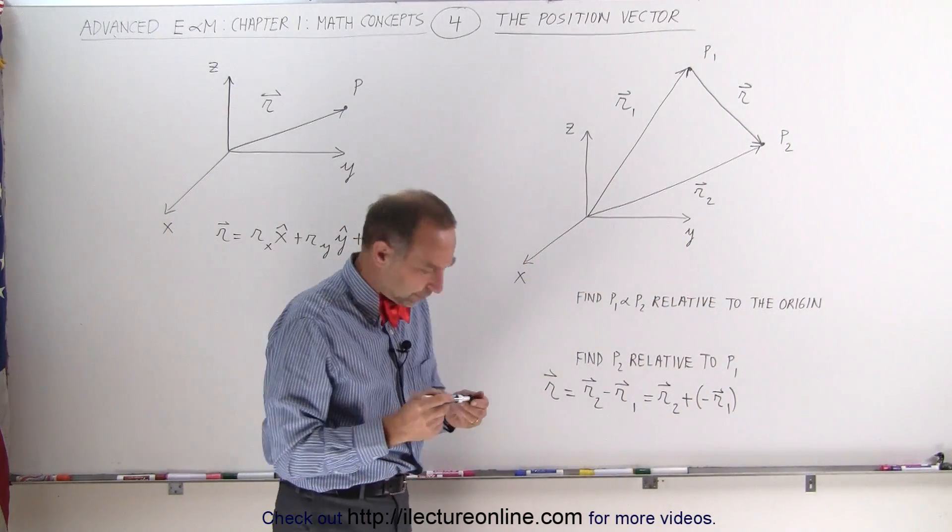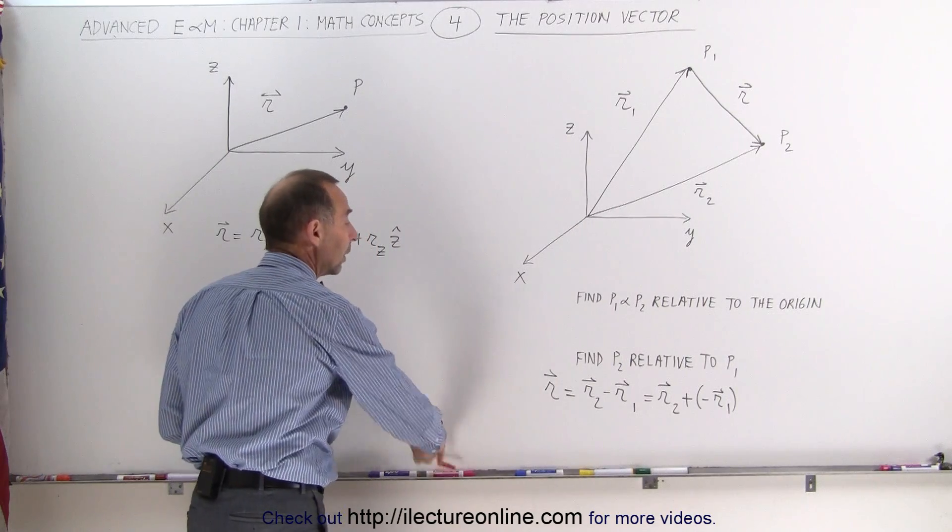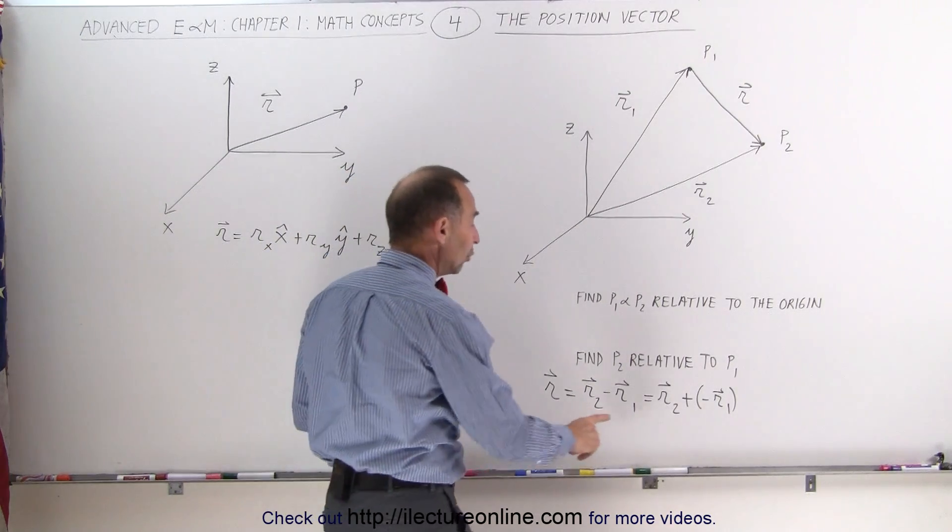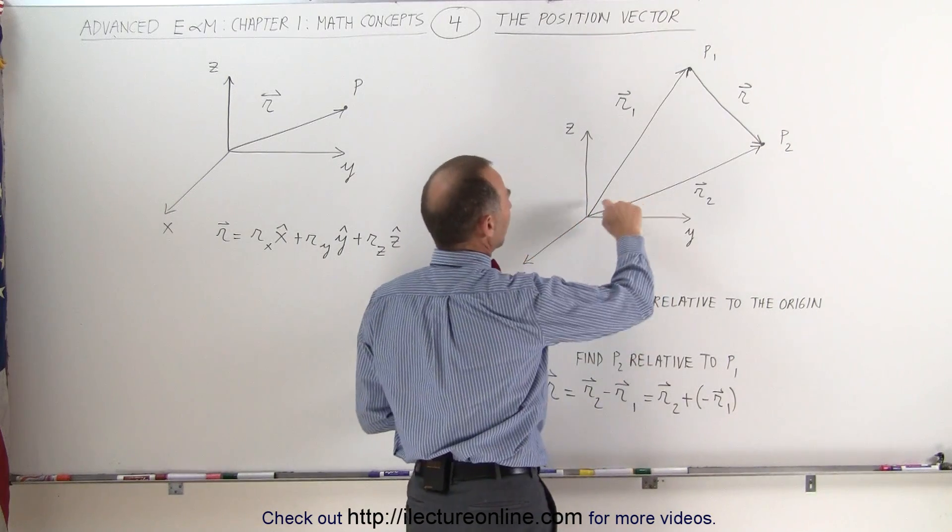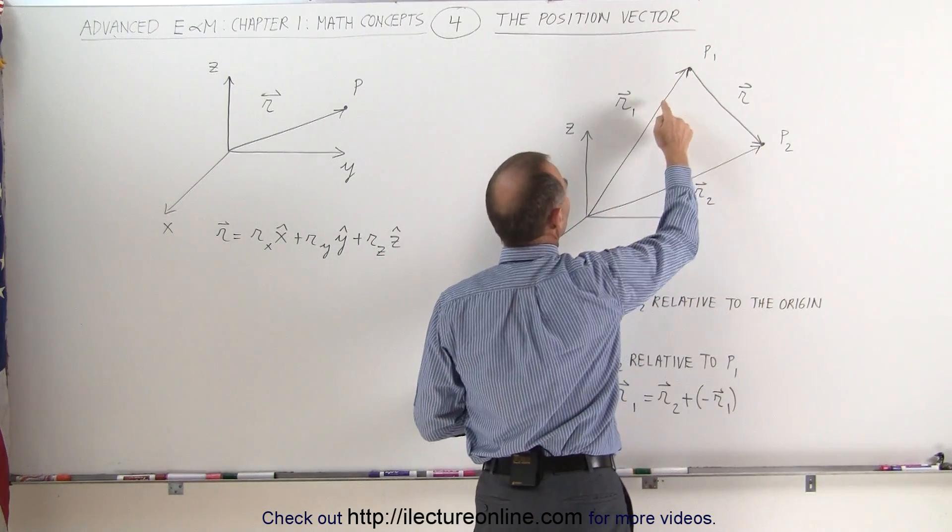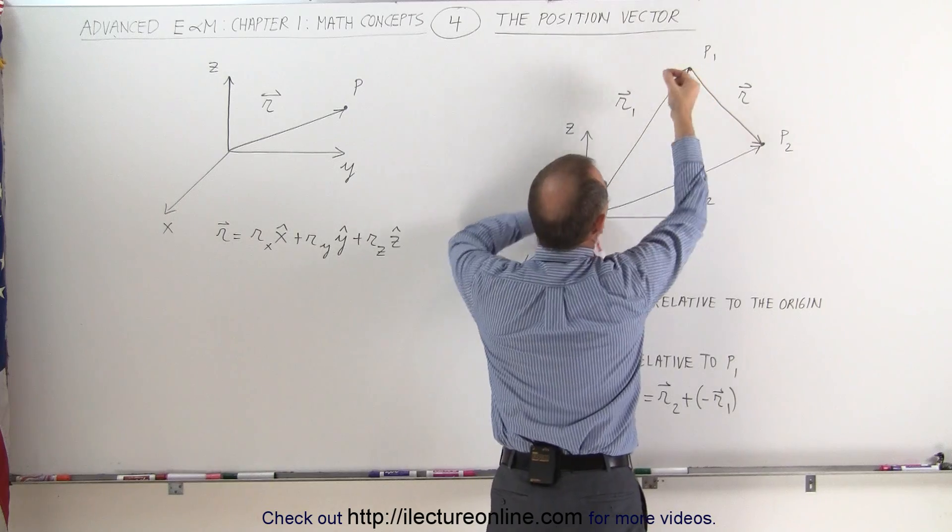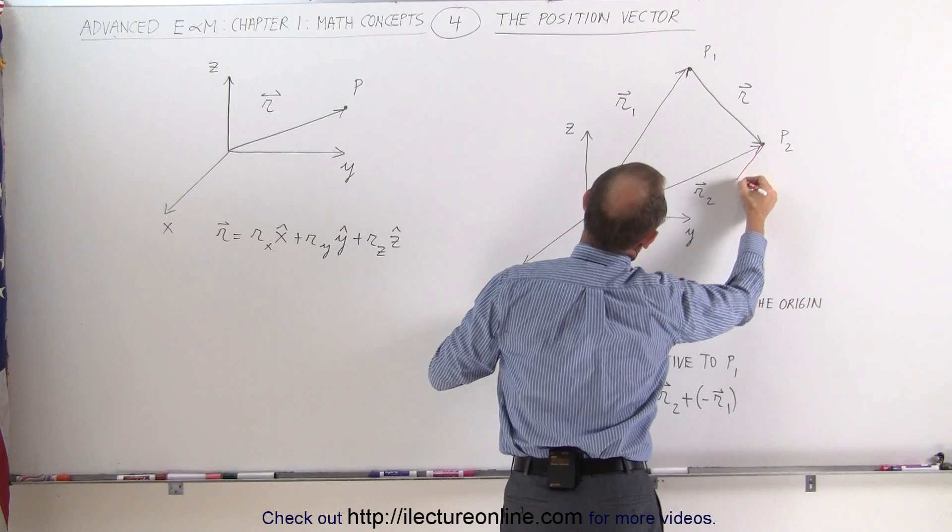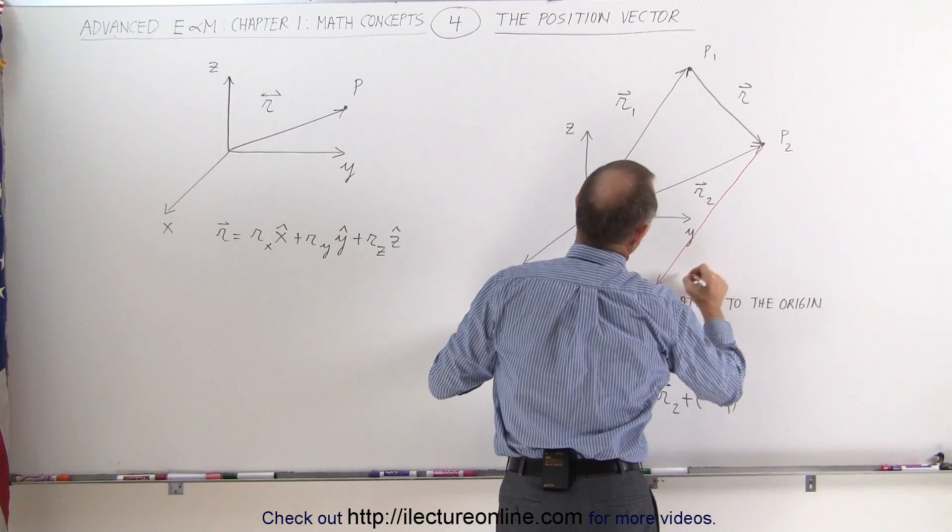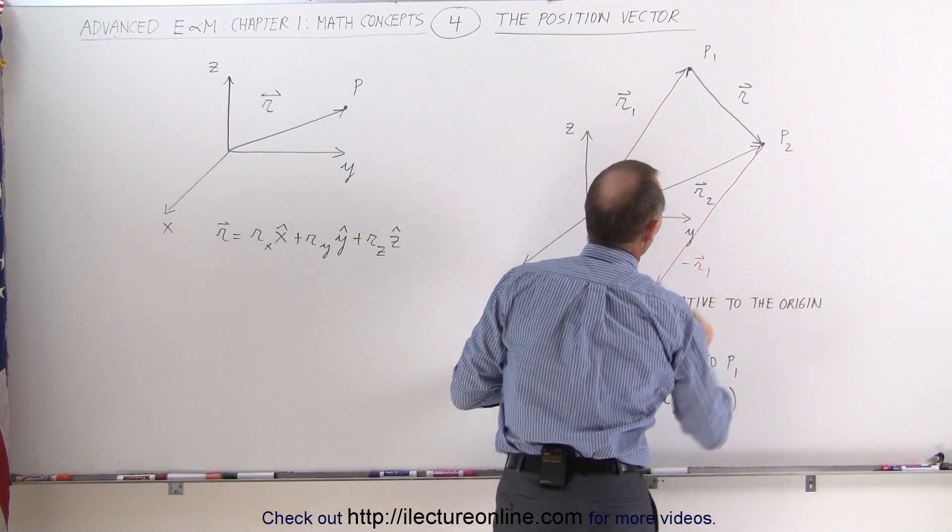Now let's see if that works. So I'm going to now add to r2 the negative of r1. So we have r1 here, if I have the negative of r1, I need to turn the vector around, and then I can draw this over here, parallel to r1, and this would be minus r1.